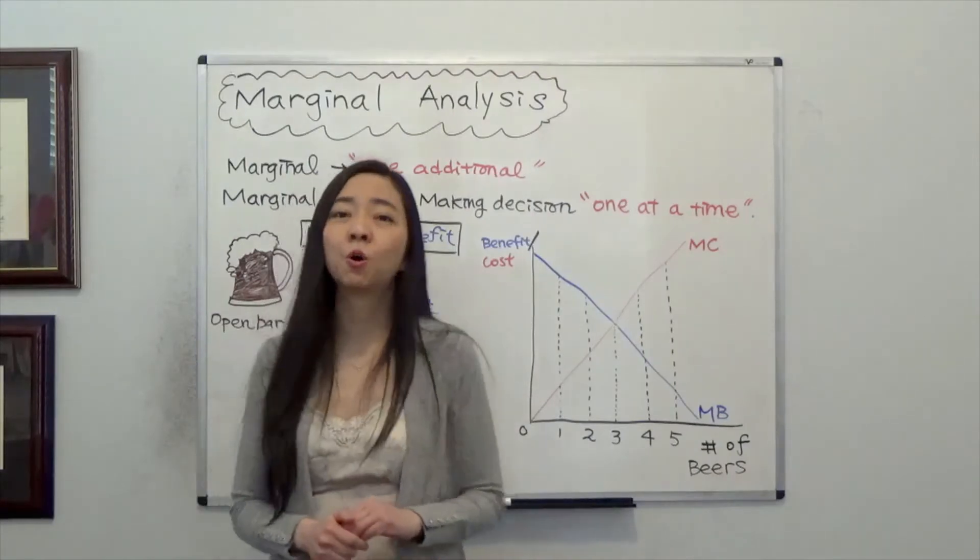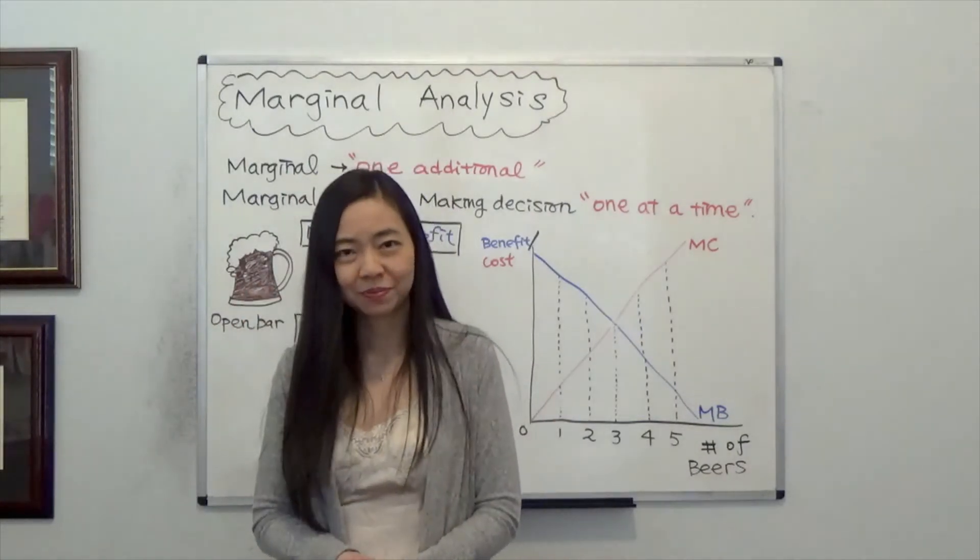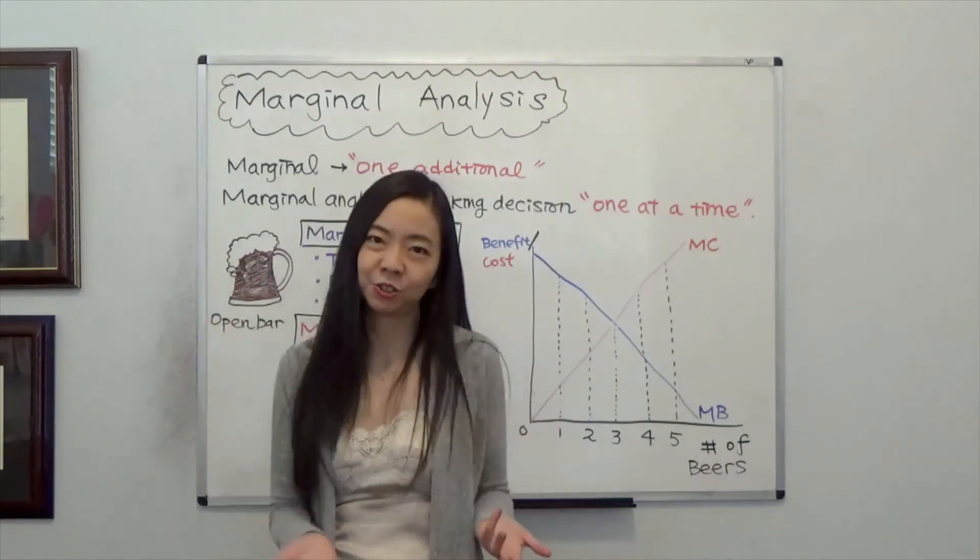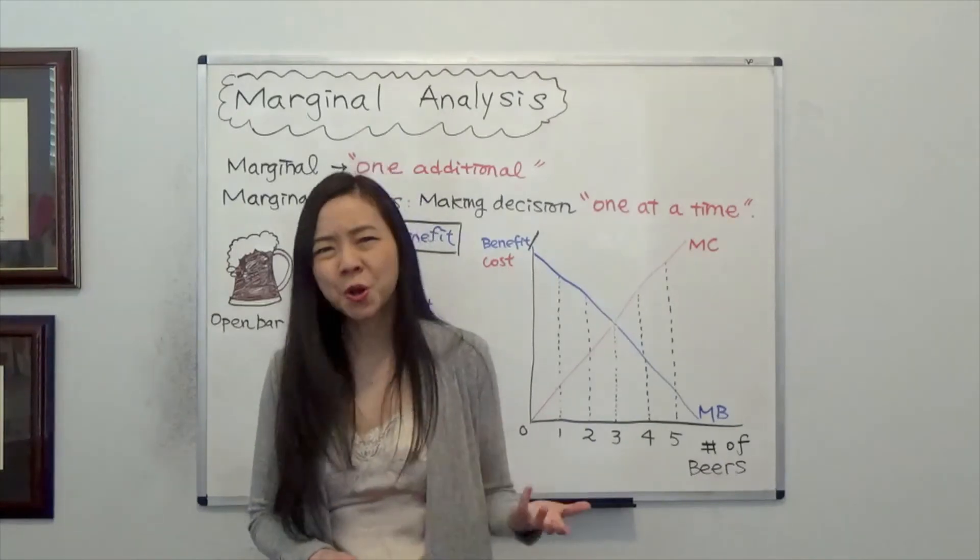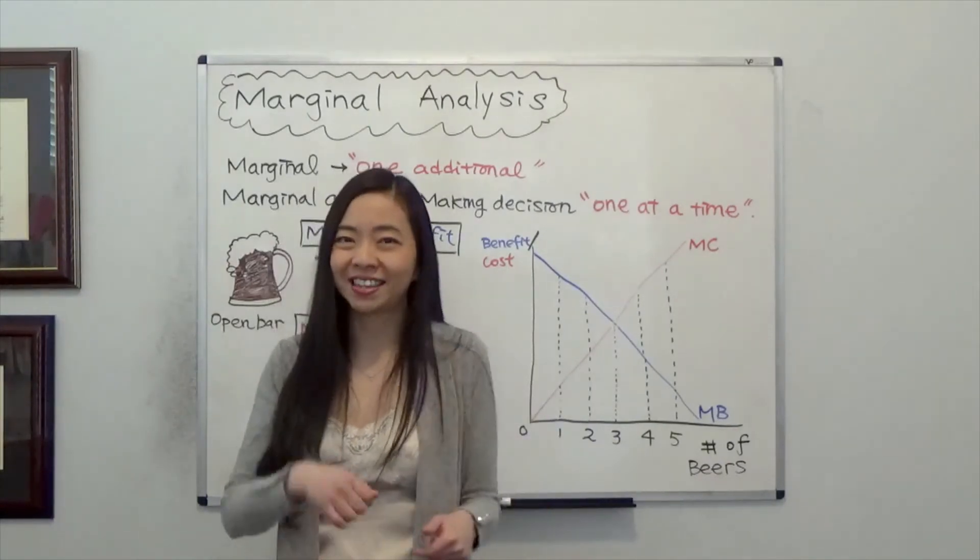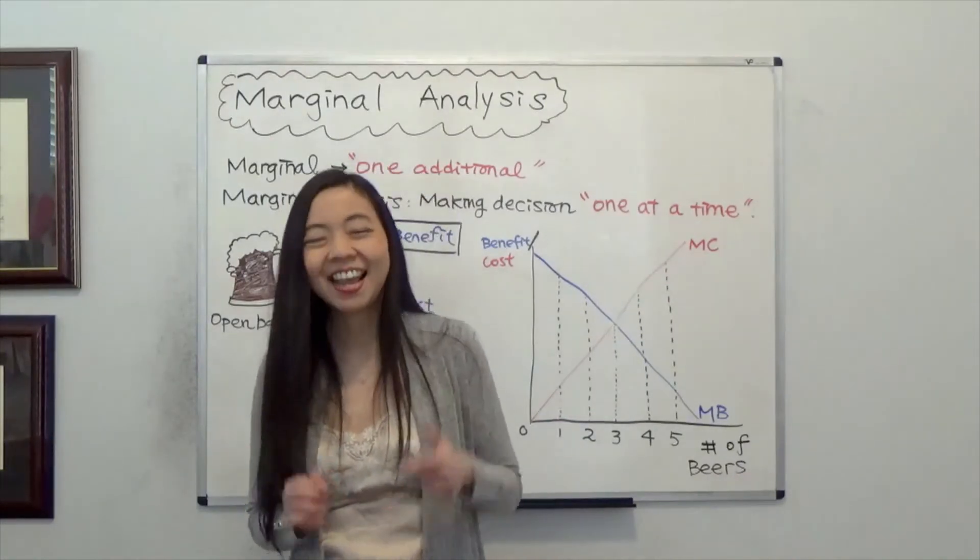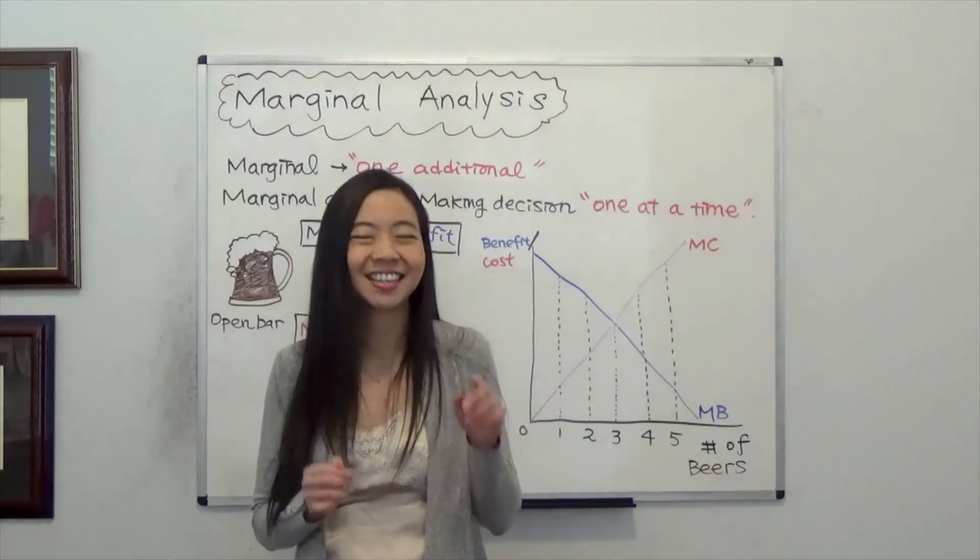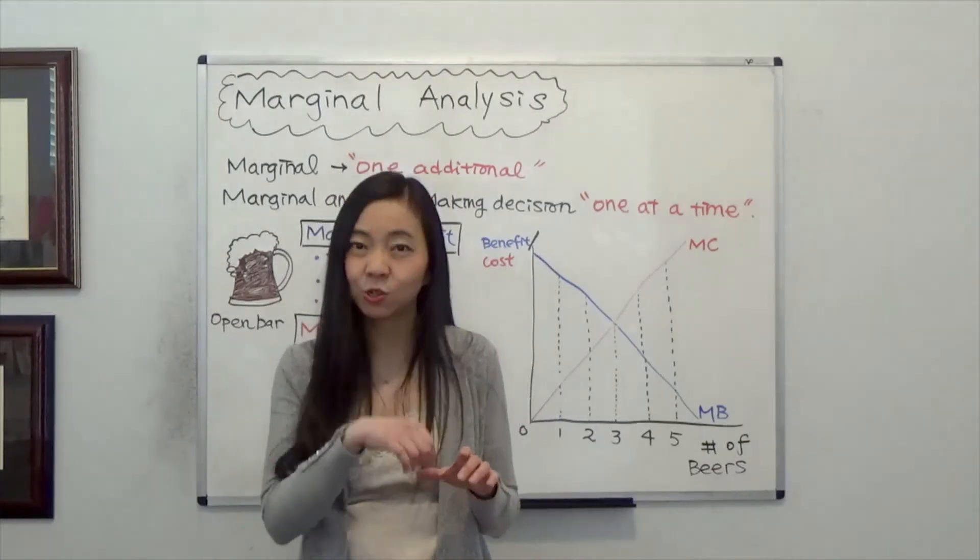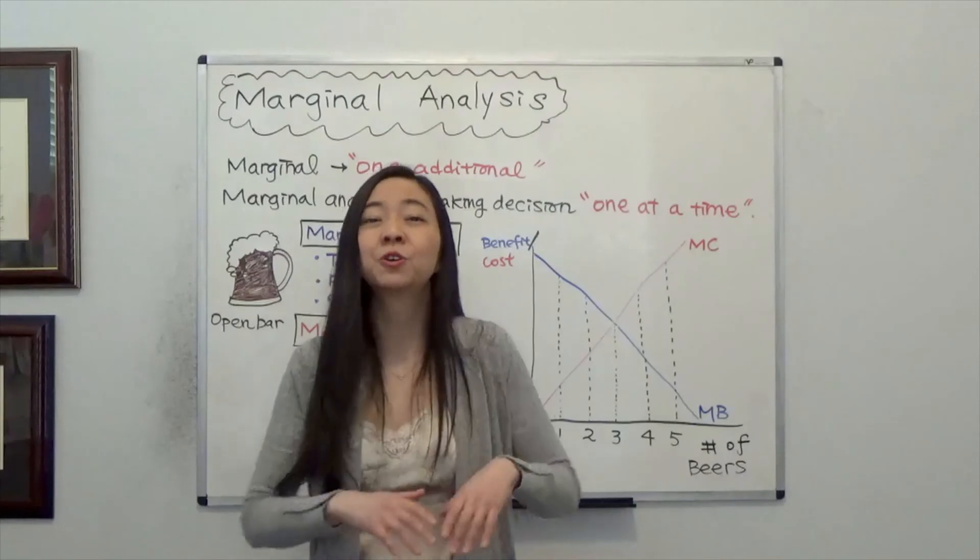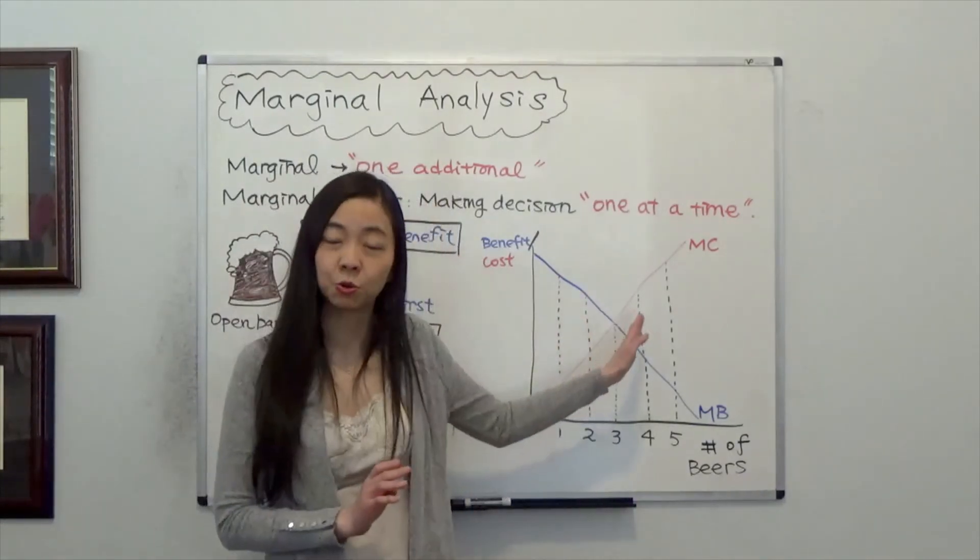And notice that you are also using marginal analysis when you're eating potato chips. When you have a big bag of potato chips, you don't open it and ask yourself, am I going to finish the whole pack? No. You make decisions one at a time. You taste the first potato chip. It tastes good. And then if the benefit is higher than the cost, then you take the second potato chip. And you continue to eat until you feel satisfied. That's when your marginal benefit is equal to marginal cost.